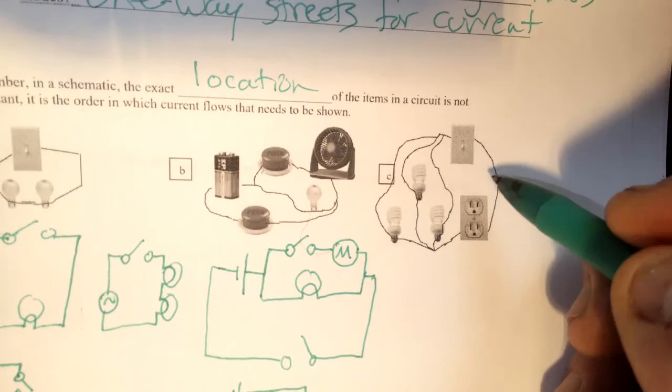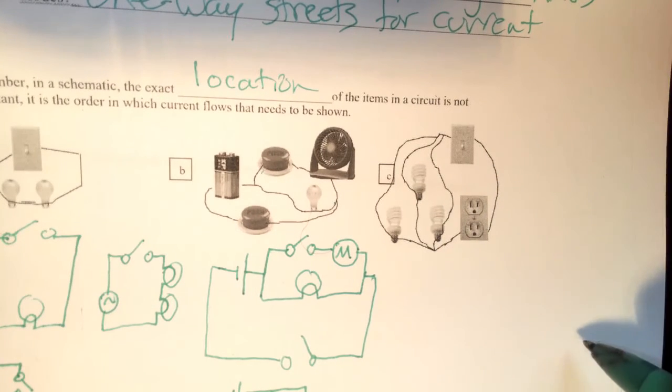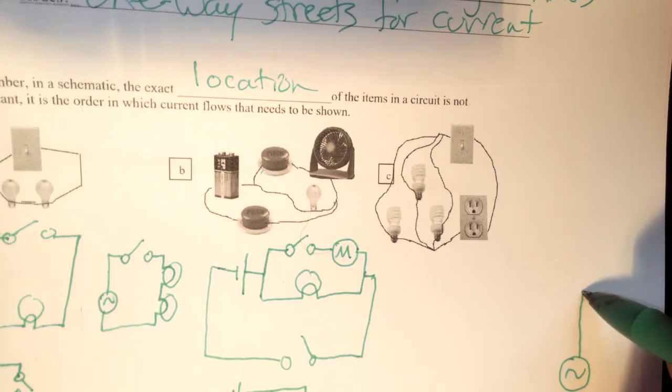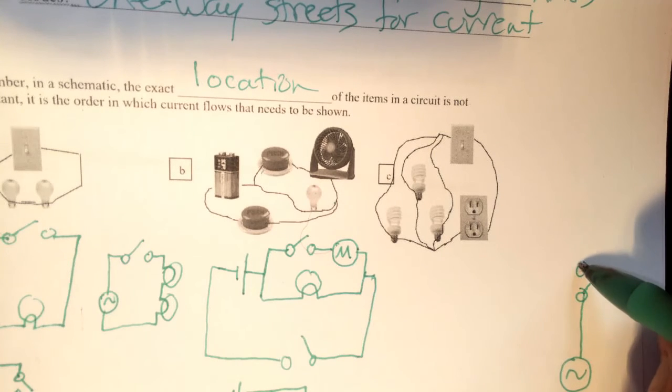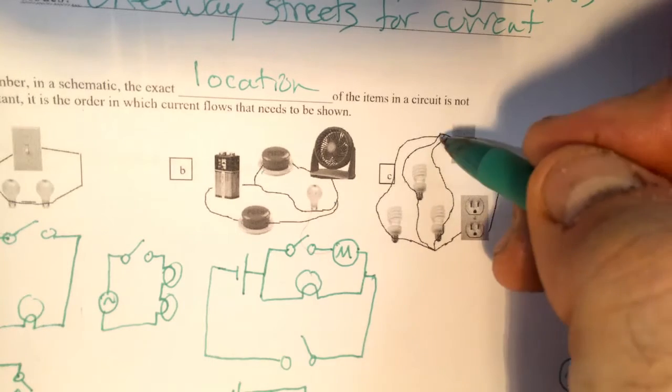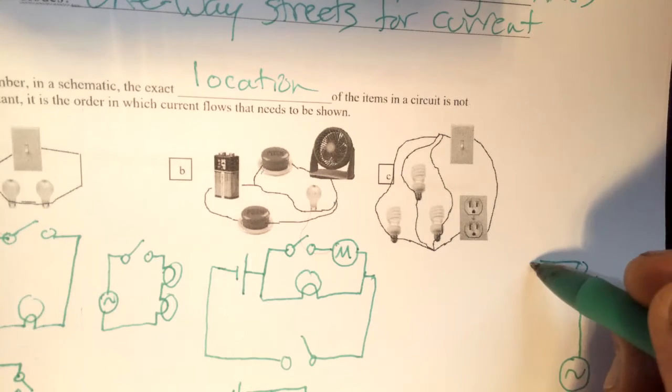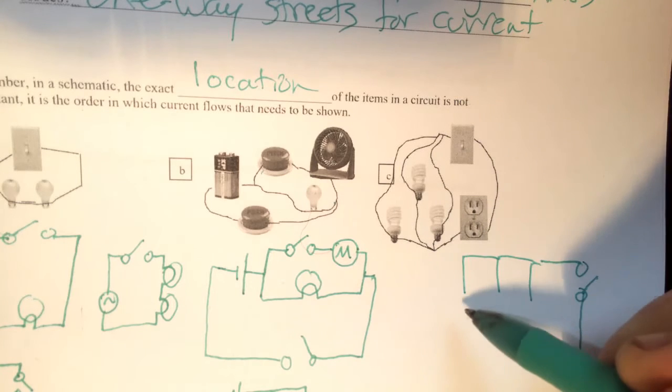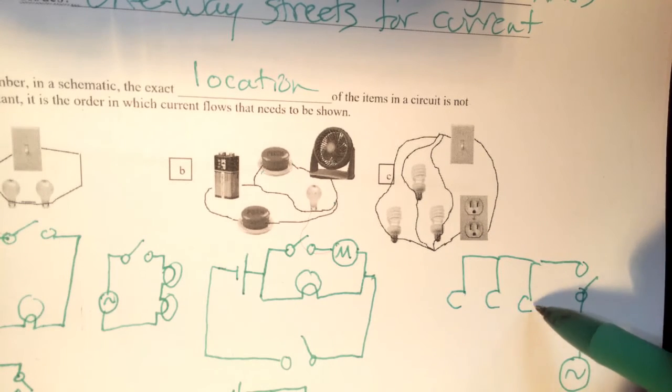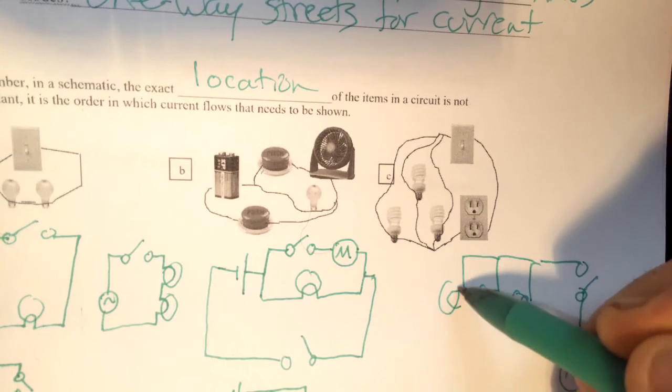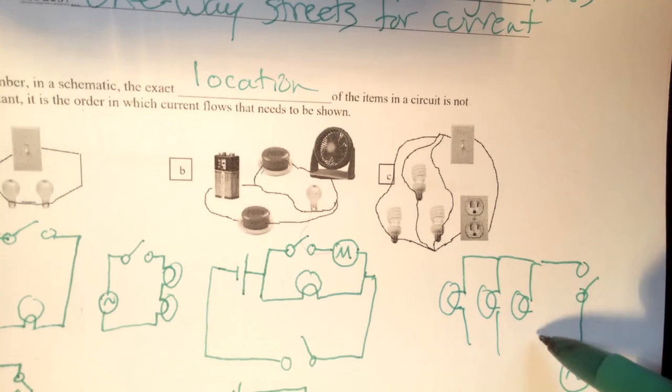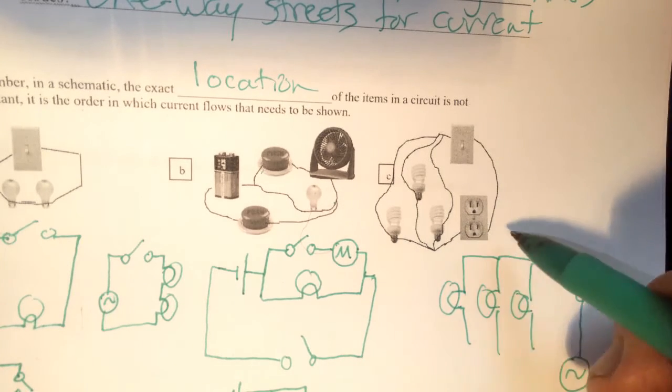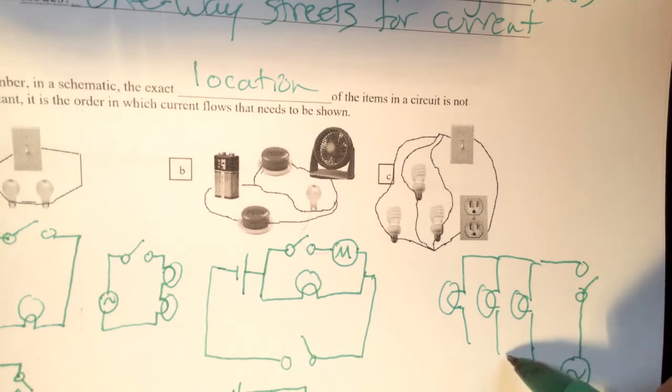Letter C. Power supply is the outlet. Then we have a switch. And then we have a branch, three different branches: one, two, three. Each branch has its own light bulb. And then it comes back together again to the outlet.